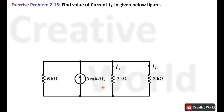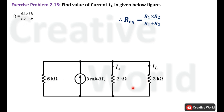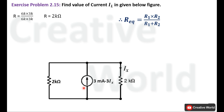Later on, we will calculate the value of iL. To calculate the value of ix, we will merge these two resistances together. Because these two resistances are connected in parallel, we will use the equivalent resistance formula for two parallel resistances: R_eq = (R1 × R2) / (R1 + R2). Placing the values — product of both resistances divided by their sum — the equivalent resistance for these two parallel-connected resistances will be 2 kΩ. We can now replace these two parallel resistances with a single resistance of 2 kΩ.